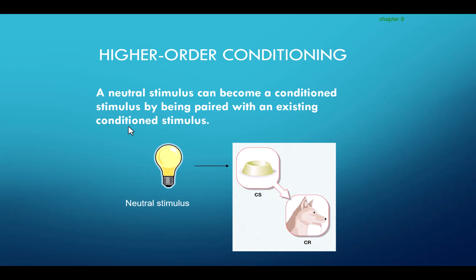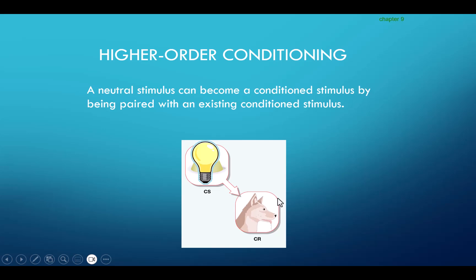Pavlov actually tested this out. The dog had learned to salivate in response to the food bowl — the food bowl was the conditioned stimulus and salivation was the conditioned response. Pavlov then paired a light bulb with that food bowl: light bulb presented, then food bowl, the dog salivated. Over time, now the light bulb comes to elicit salivation on its own. The food bowl will also still elicit salivation, so now you have two conditioned stimuli that elicit that response.